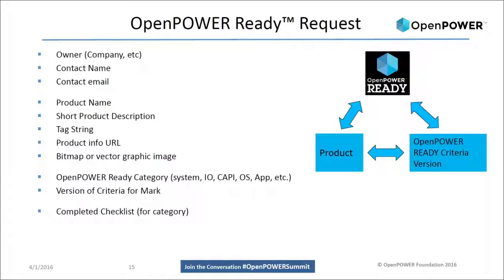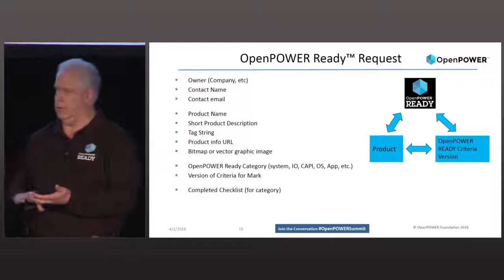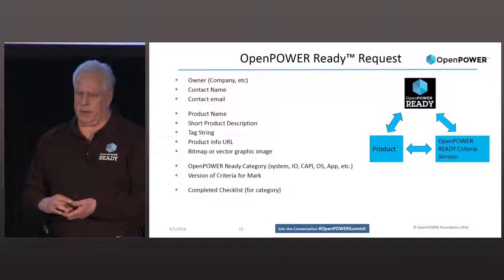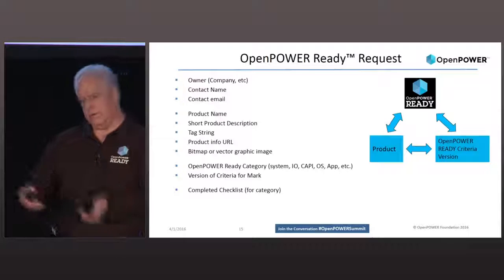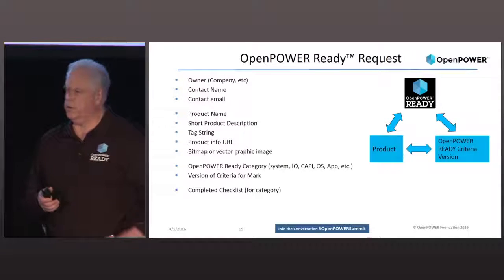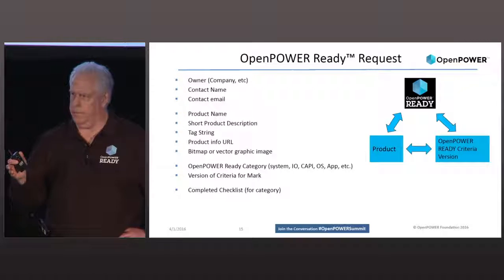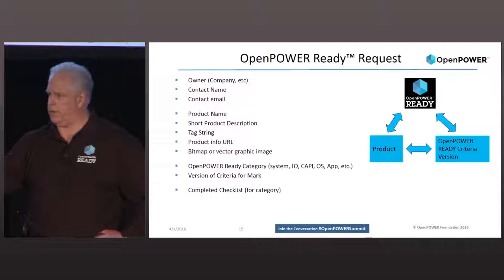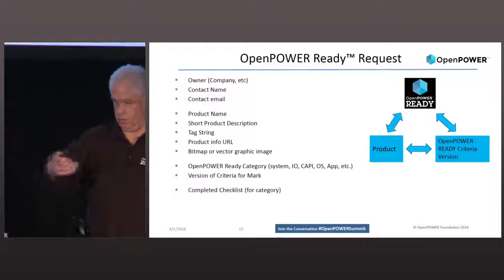To request Open Power Ready status for a product, you fill out a request. You've got to tell who the developer or producer is, provide a contact name, the product name, and a description. What this does is tie the product to the usage of the mark — you actually request the mark and receive a trademark use license upon approval.